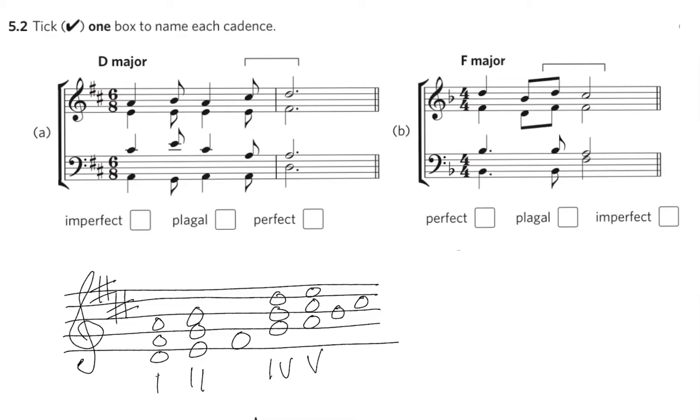I always like to look at the last chord in a cadence first. So let's look at the notes in this chord. We have D, A, F sharp and then another D.